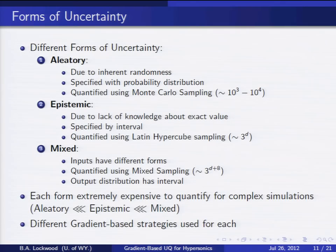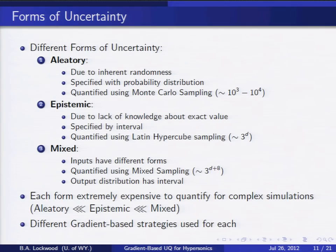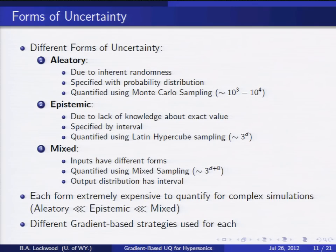Before specifics on how we use the gradient, we need to discuss the different forms of uncertainty. Aleatory uncertainties are due to inherent randomness in input parameters, specified with a probability distribution function. They're straightforward to quantify — you do Monte Carlo sampling with thousands to 10,000 simulation realizations and build up a distribution. Epistemic uncertainties represent lack of knowledge about the exact value of a parameter and are specified by an interval — we just know the parameter is somewhere inside it. Because we have so little information, we must quantify through exhaustive sampling over all combinations of variables, which scales incredibly poorly as the number of parameters d increases. You can also have mixed form, with some variables epistemic and some aleatory, requiring a nested approach that is also incredibly expensive.